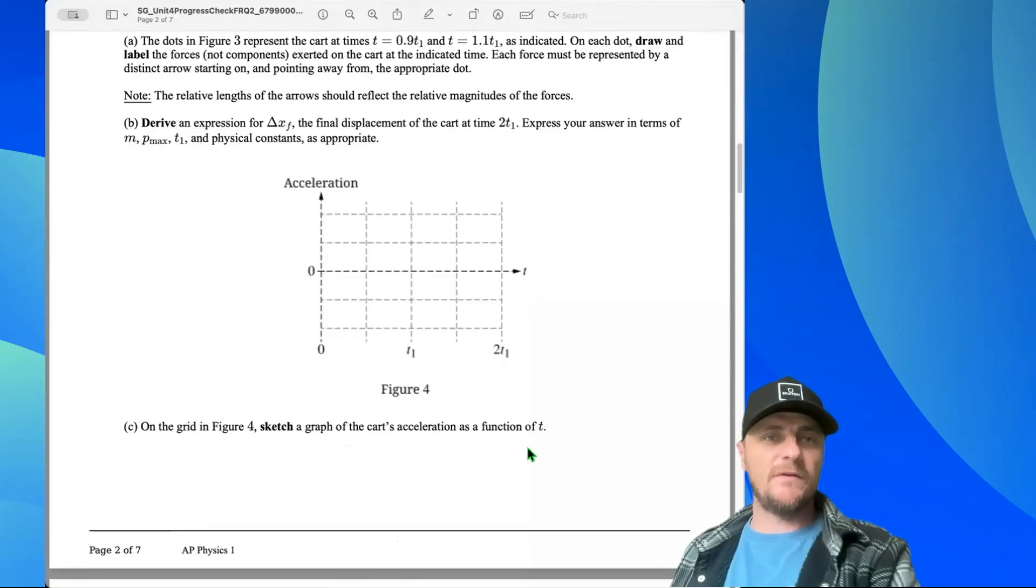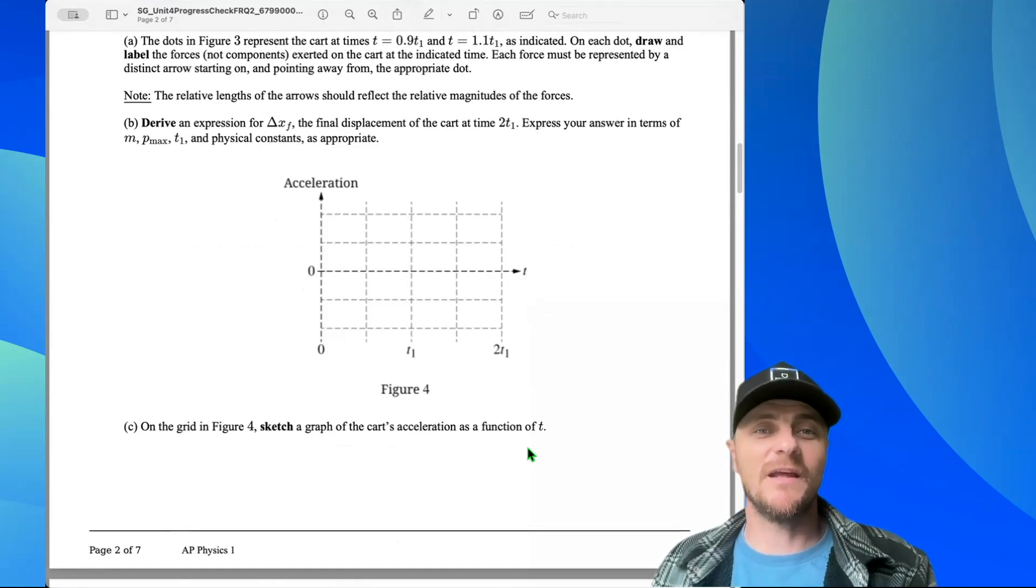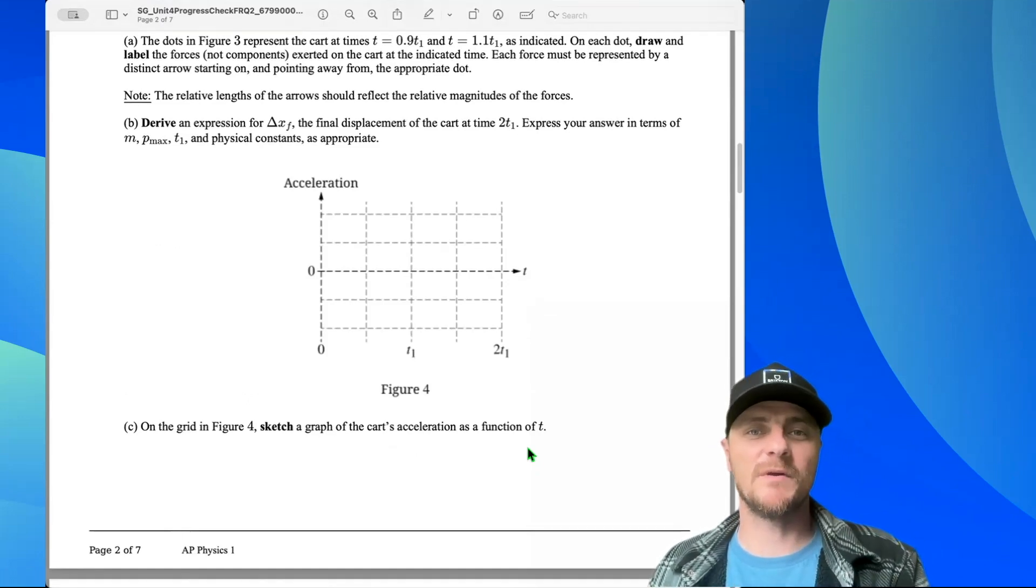All right, part B. Let's derive an expression for delta xf, the final displacement of the cart at time 2t1. Express your answer in terms of m, p max, t1, and physical constants as appropriate.